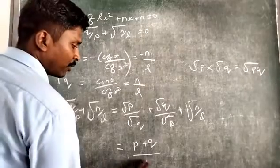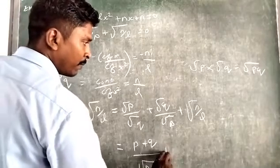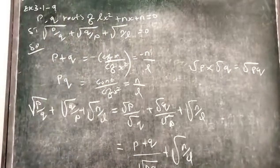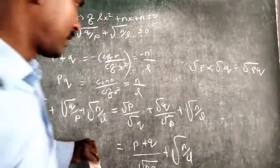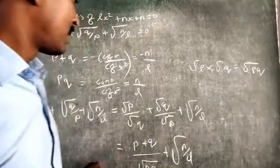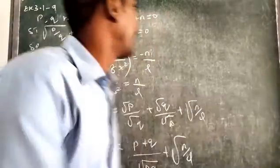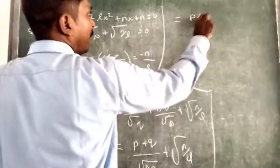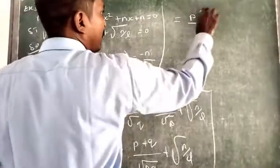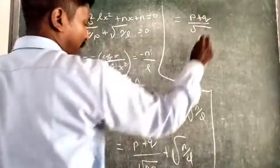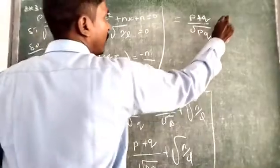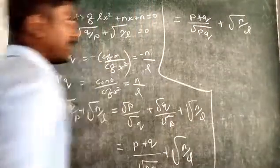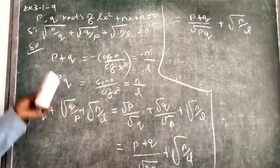Then, we can write square root of BQ plus square root of N by L. We simplify by dividing N by L. Then we have the numerator B plus Q, divided by square root of BQ, plus square root of N by L. Now, we know the value: sum of roots B plus Q equals minus N by L.